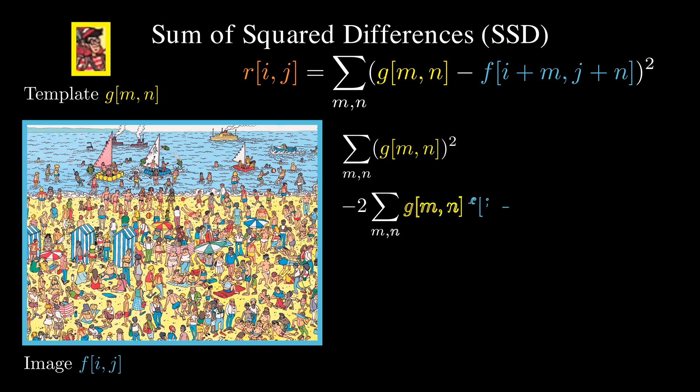Let's expand the square into three terms. The first term is just a constant that does not depend on the image. The second term is the correlation filtering, just like before. The third term involves filtering the squared image intensities with a box filter.